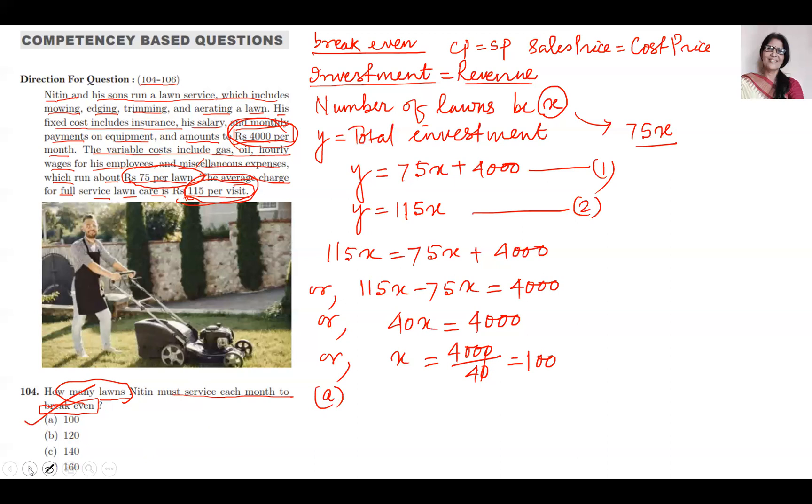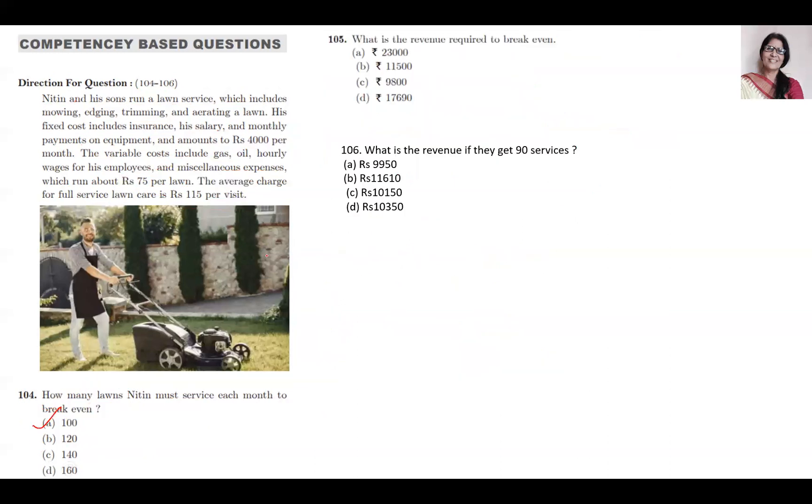Now coming to the next question. What is the revenue required to break even? This is a very simple question because the number of lawns was x equals 100, which we have calculated already.